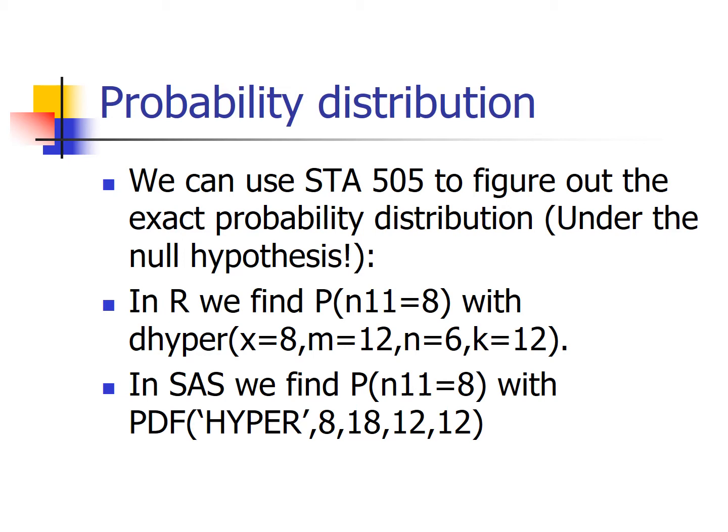In both examples, I'm calculating the probability of the upper left-hand cell count being 8. The hypergeometric distribution has three parameters — like the normal distribution has mean and standard deviation. To calculate any hypergeometric probability, we need M, N, and K. What these three parameters represent is a bit beyond the scope of this class, though you could Google it. Importantly, R and SAS define those three parameters differently, which is why the function inputs look different, but you'll get the same probability.